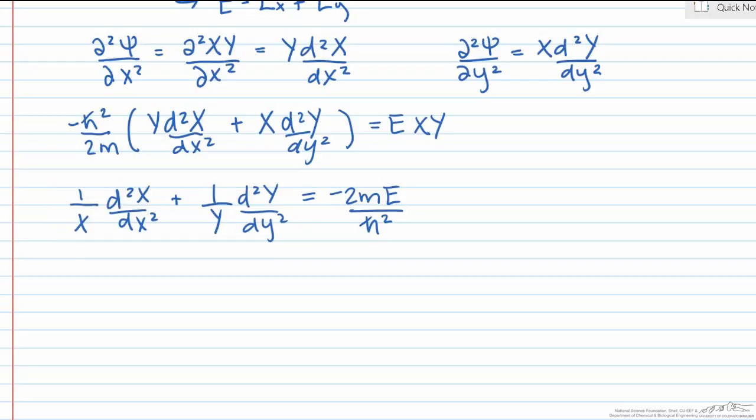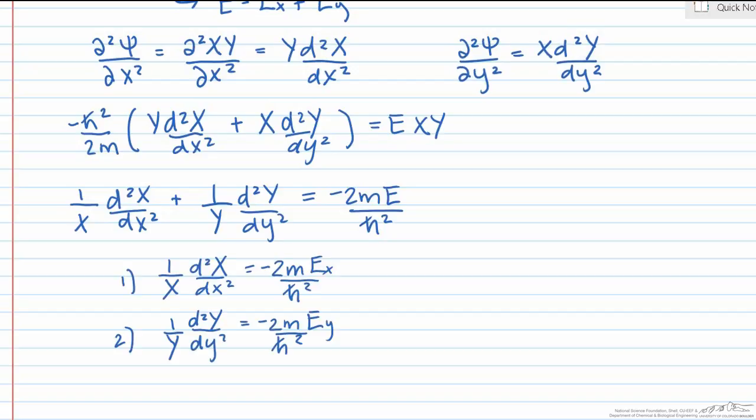So since this first term cannot change, this also means that the second term cannot change if we vary y. What this implies is that both terms are in fact equal to a constant. And this fact allows us to rewrite each of these terms in the following way.